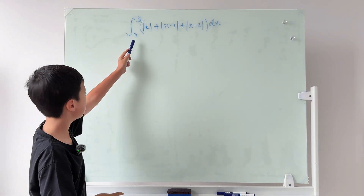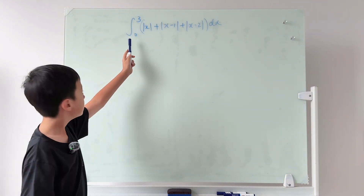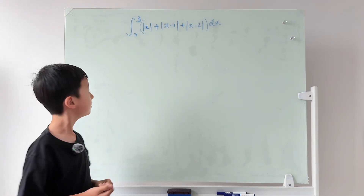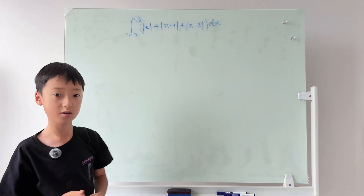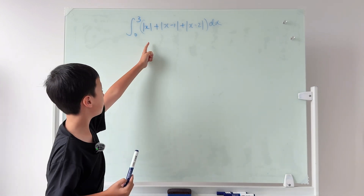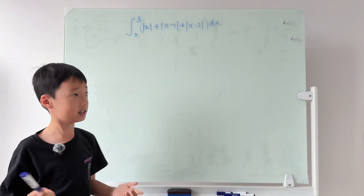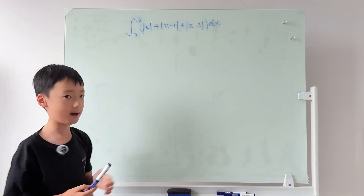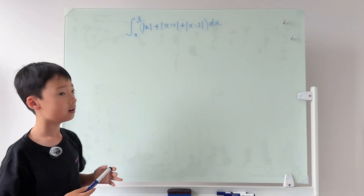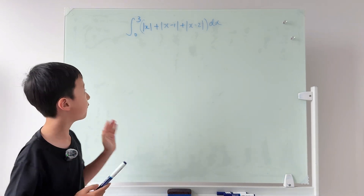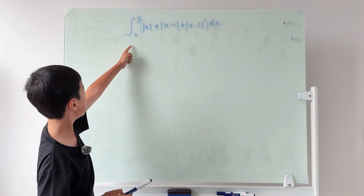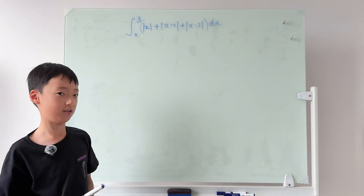This integral has bounds from zero to three. What if we get rid of the bounds and just integrate as-is without them? So let's first try to integrate the absolute value of x.